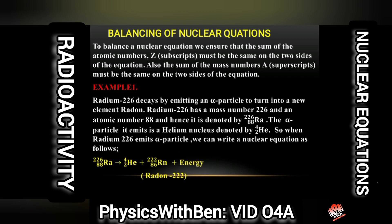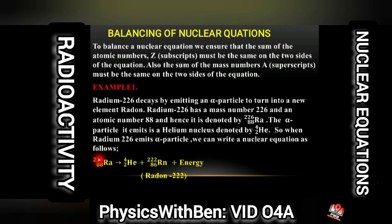To balance the equation: the arrow here stands for an equal sign. The left-hand side and right-hand side must balance. So 226 equals 222 plus 4 — it is balanced on top. For the atomic numbers: 88 equals 2 plus 86, which gives us 88. Hence the nuclear equation is balanced.